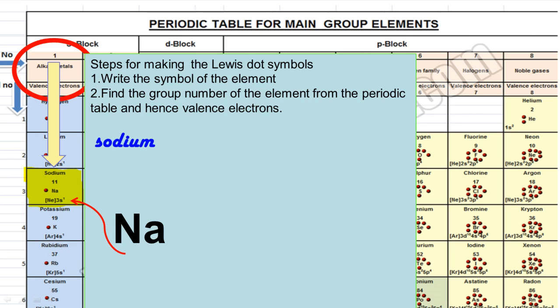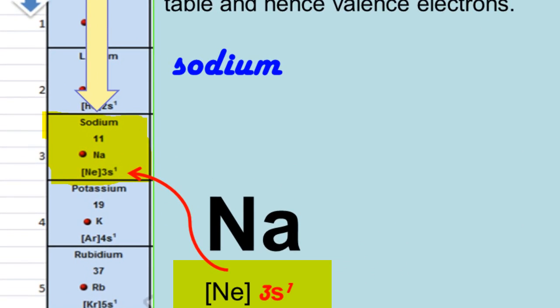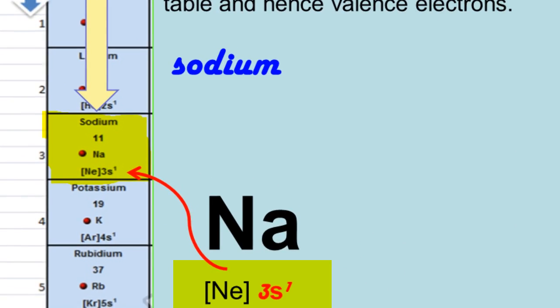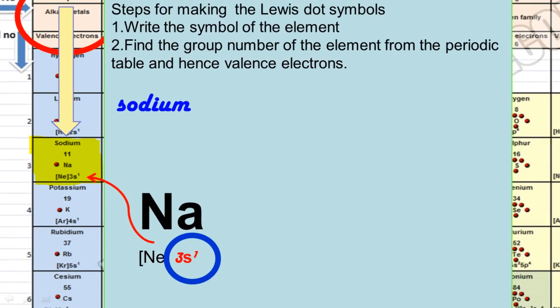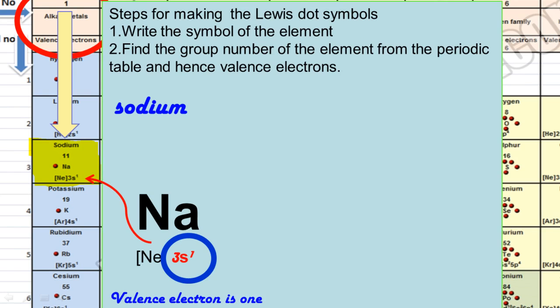You can predict valence electrons with the help of electronic configuration also. Its outermost shell is 3s1. It has one electron in its outermost shell, so valence electron is one.